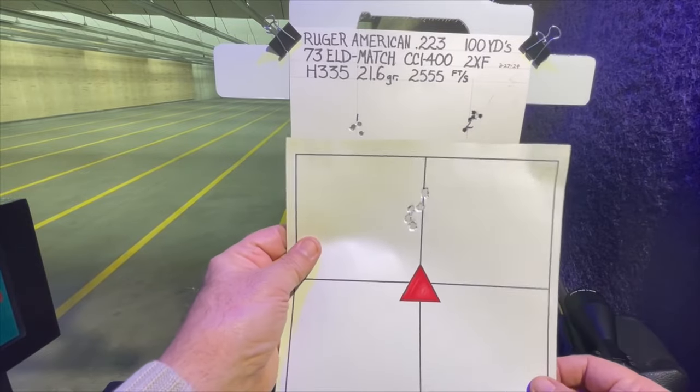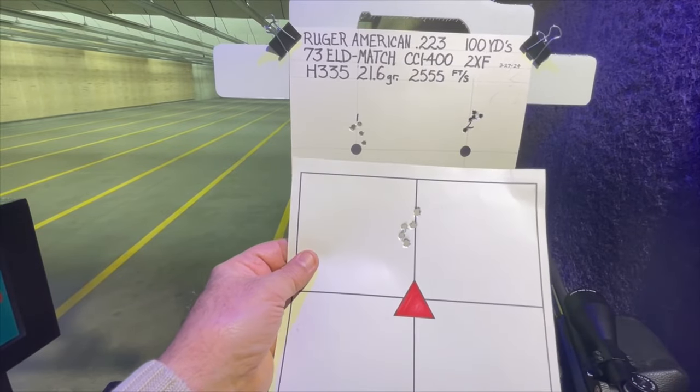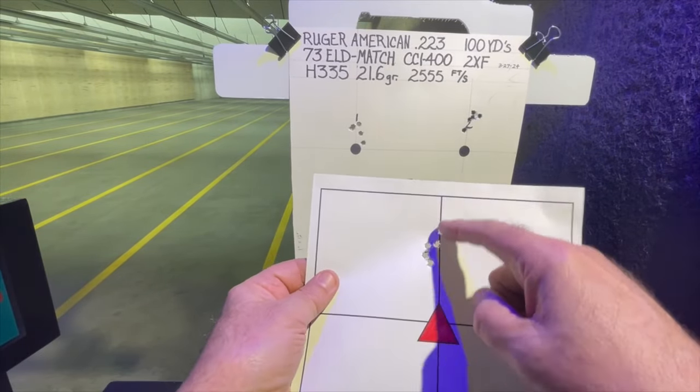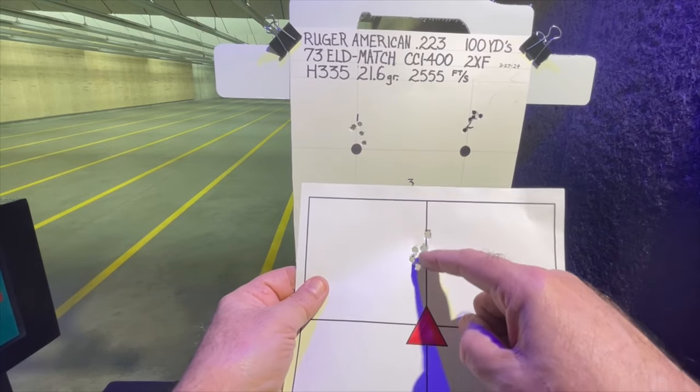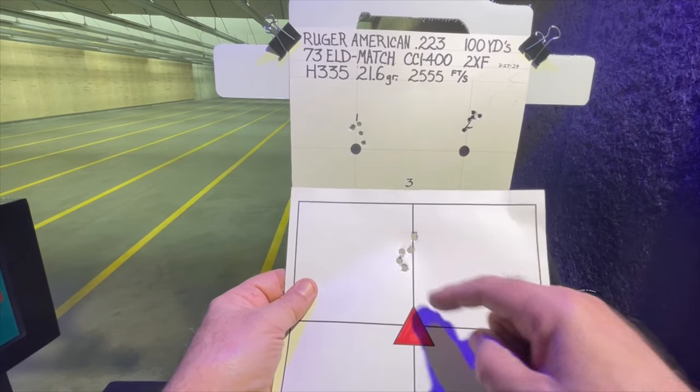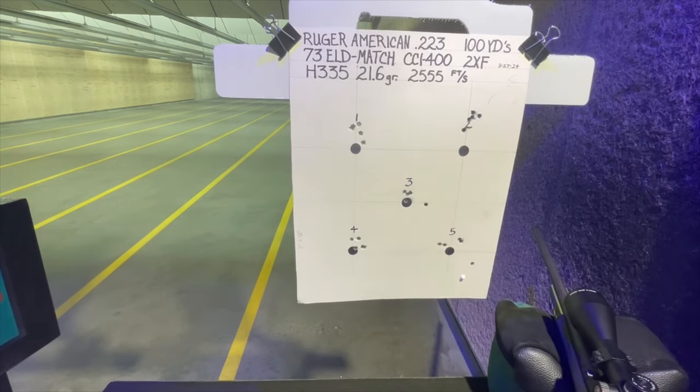And this was my barrel fouling group. I shot five shots here. It looks like about 1.2 inches with the best four out of five at about three quarters.